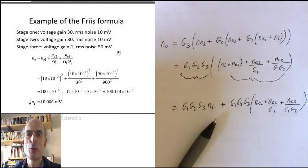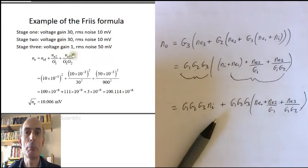This equation is sometimes known as the Friis formula and we can do a simple example of it like this. Supposing we have a three stage amplifier. First stage and second stage both have a voltage gain of 30 and both have RMS added input equivalent noise of 10 millivolts RMS. The third stage has a voltage gain of 1, so it doesn't amplify at all, but it introduces a much larger noise of 50 millivolts.